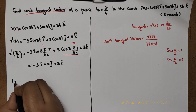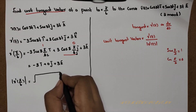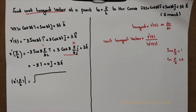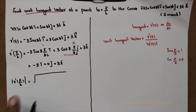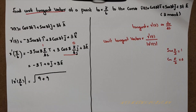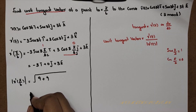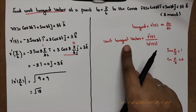We have to find the modulus of r'. To find the modulus, we take the i, j, k coefficients, square them, and add. The i coefficient is -3, so squared is 9; j coefficient is 0, squared is 0; k coefficient is 3, squared is 9. So 9 plus 9 is root 18, which simplifies to 3 root 2.